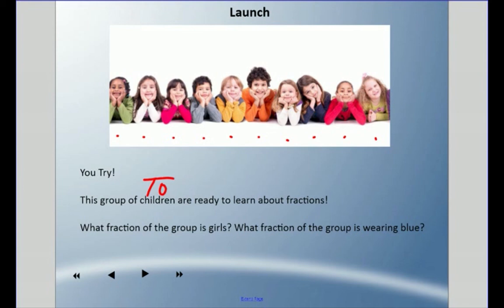And so the question was, what fraction of the group is girls? Well, girls—denominator ten, ten children. So I have one, two, three, four, five, six, seven. Seven-tenths of the set of children is girls.